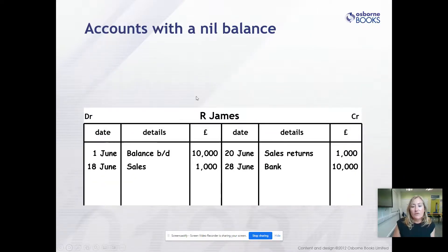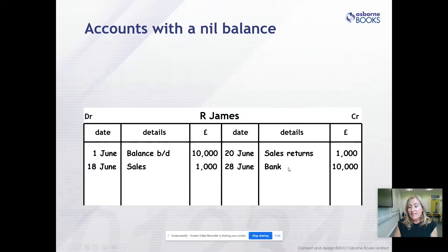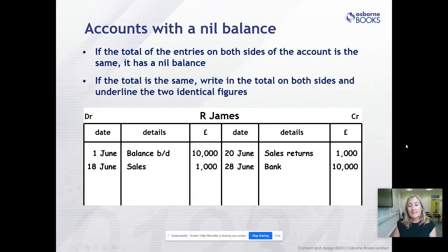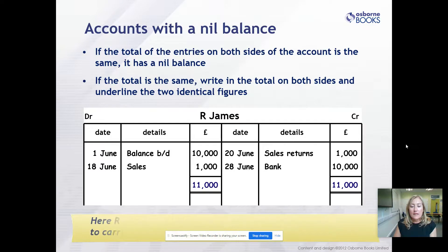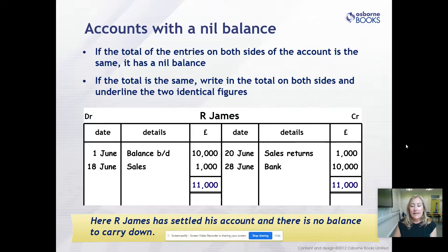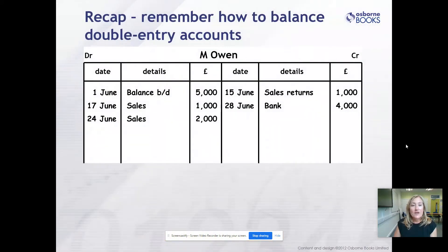Accounts with a nil balance - R. James is a trade receivable. The balance brought down was on the debit side: R. James owed £10,000 at the start of the month. We sold another £1,000 of goods on the 18th of June. R. James returned those goods on the 20th of June, then paid the balance owing of £10,000 on the 28th of June. The debits add up to £11,000 and so do the credits - no BALCD needed. Don't do a BALCD for zero; just rule it off to prove the account has balanced. R. James has settled the account with no balance to carry down.